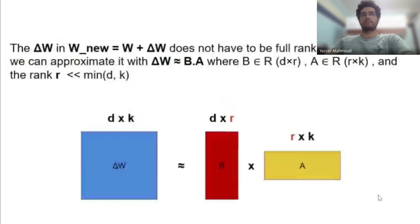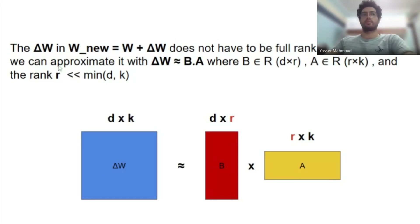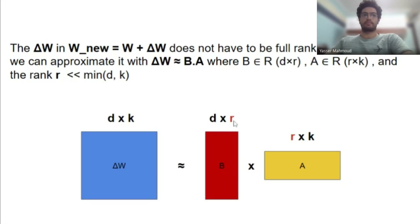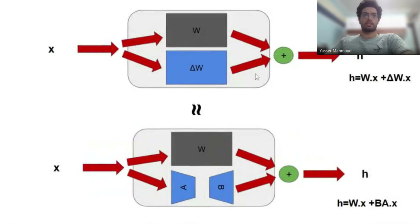The LoRA hypothesis says the matrix we're adding to the original weights does not have to be full-rank — we can approximate it with two much smaller matrices. The change of weights ΔW for a specific downstream task can be represented as the multiplication of two matrices B and A, which have a rank r dimension much smaller than the original matrix. So instead of ΔW, we use B·A, decomposing it into two far smaller matrices.